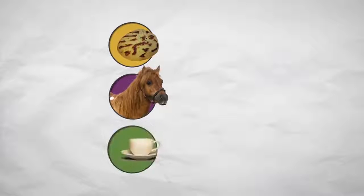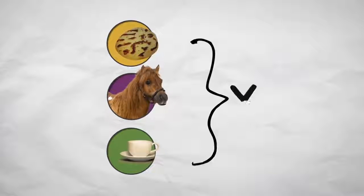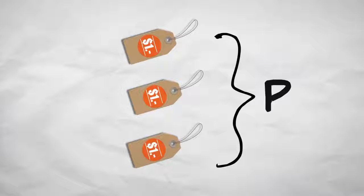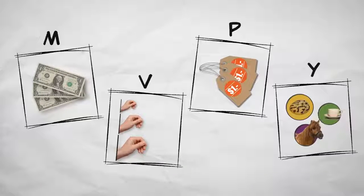The pupusa, pony ride, and coffee are real goods and services, which we'll call Y. And the price of those goods and services, we'll call P. These are the variables in the quantity theory of money.